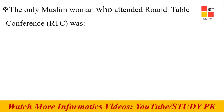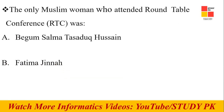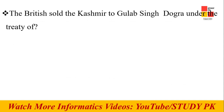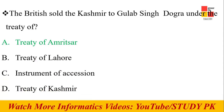Next question: The only Muslim woman who attended the Round Table Conference was Begum Jahanara Shahnawaz. This is the right option. Next question: The British sold Kashmir to Gulab Singh under the Treaty of Amritsar. The right option is the Treaty of Amritsar.